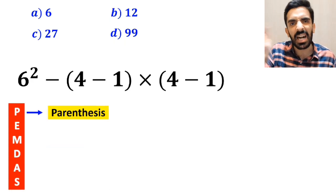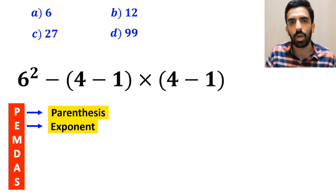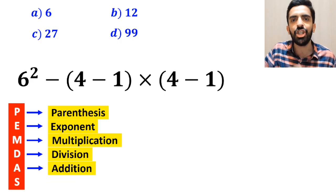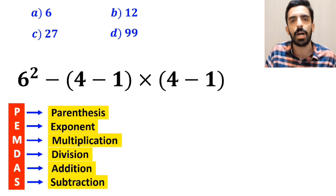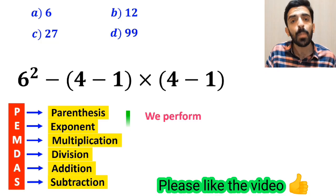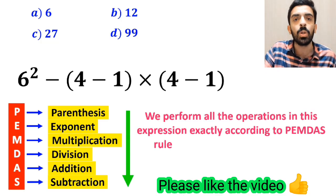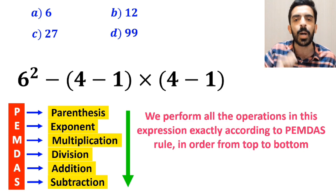And this rule, P stands for parenthesis, E stands for exponent, M stands for multiplication, D stands for division, A stands for addition, and S stands for subtraction. We must perform all the operations in this expression exactly according to the PEMDAS rule, in order from top to bottom.